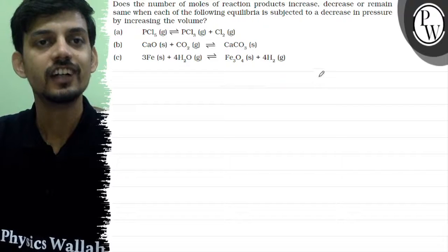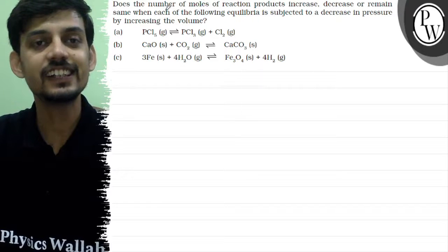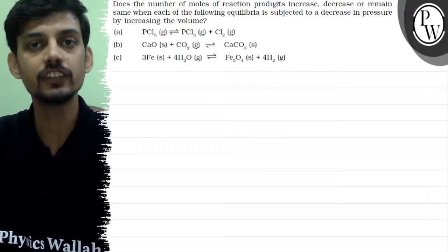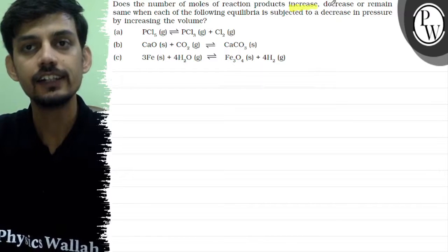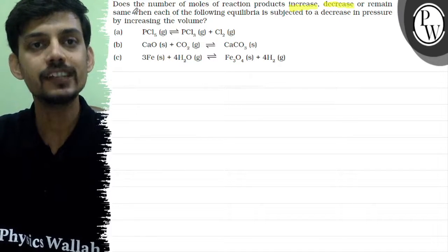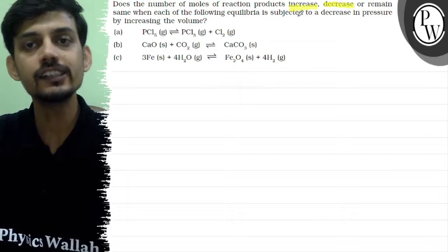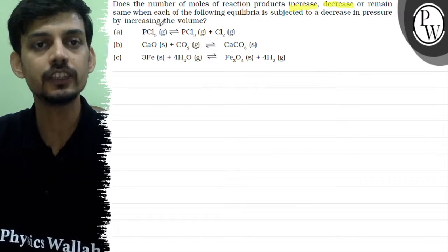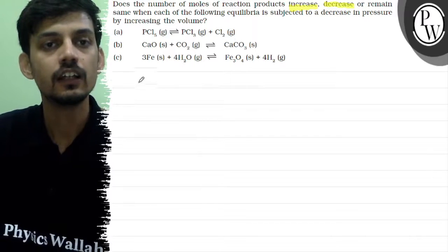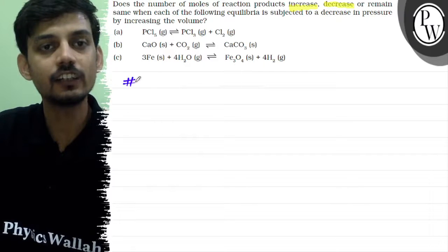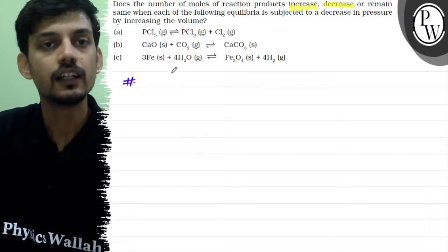The question asks: does the number of moles of reaction products increase, decrease, or remain the same when each of the following equilibria is subjected to a decrease in pressure by increasing the volume? Three reactions are given, so first let's understand the key concept.